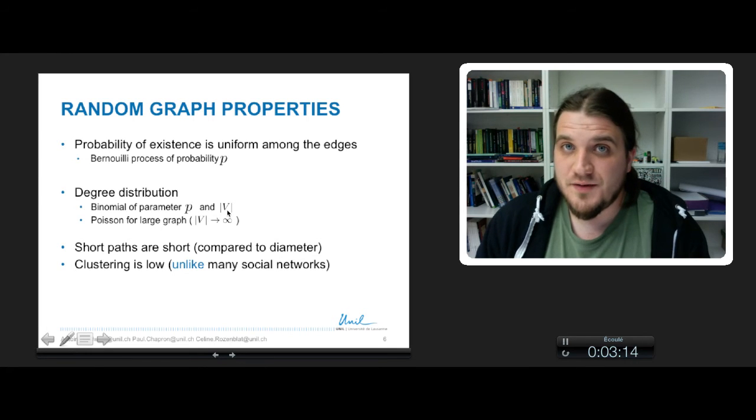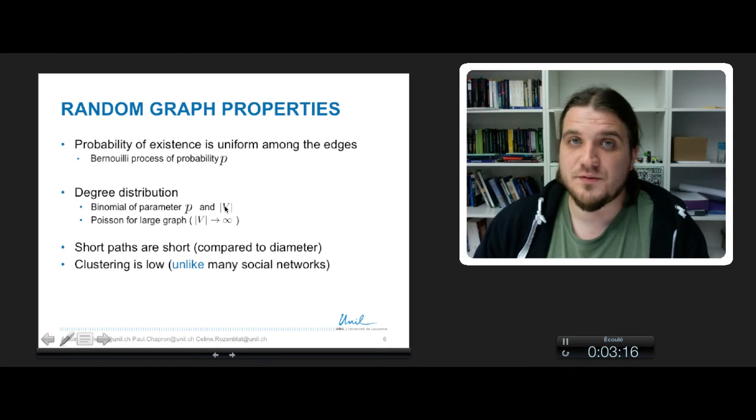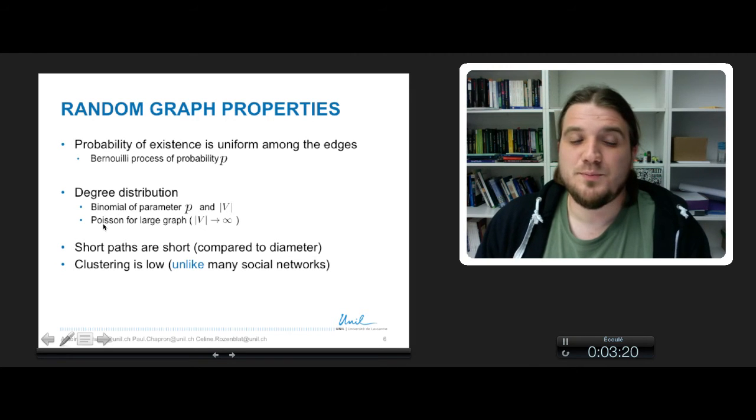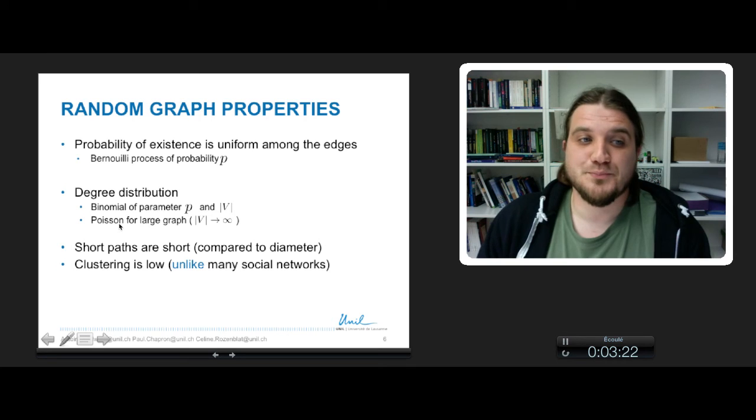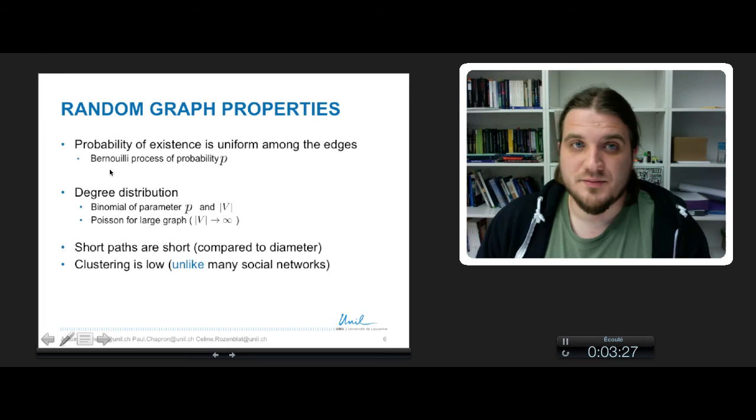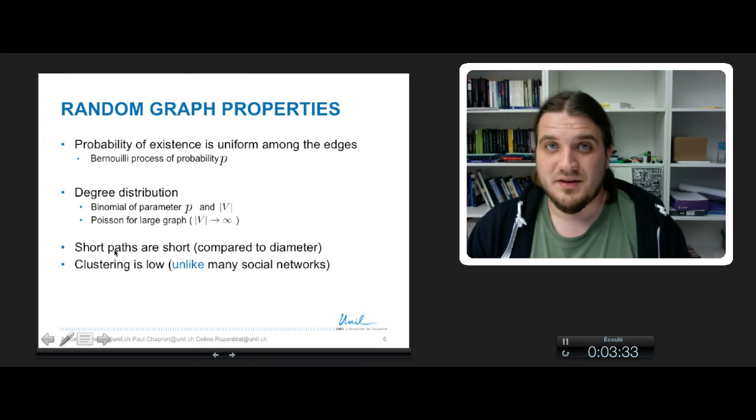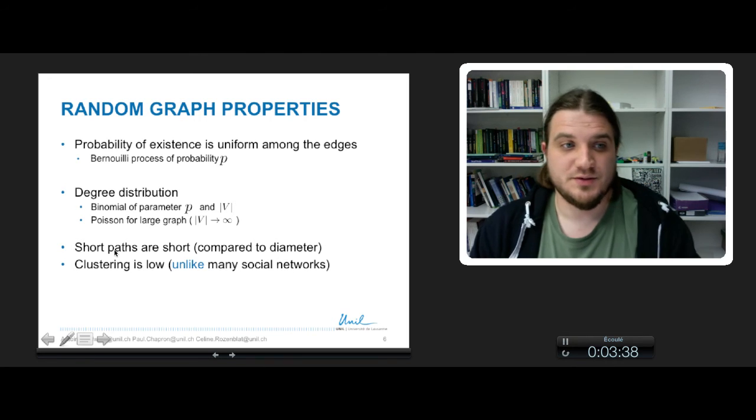If you take huge values of the size of v, so for huge networks, the binomial distribution will tend to a Poisson distribution. And in random graph model networks, the short paths are short. It means that compared to the diameter of the network, the nodes are pretty close to each other.